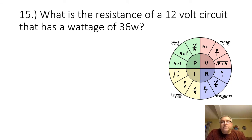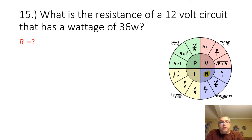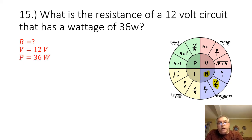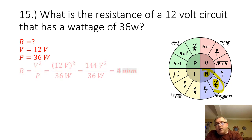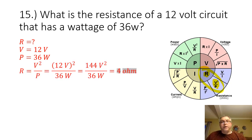Problem 15: what is the resistance of a 12-volt circuit that has a wattage of 36 watts? We are looking for the resistance. We are given the voltage of 12 volts and the power. Our equation is R equals V squared divided by P. 12 volts squared divided by 3,600 watts gives us a resistance of 4 ohms.